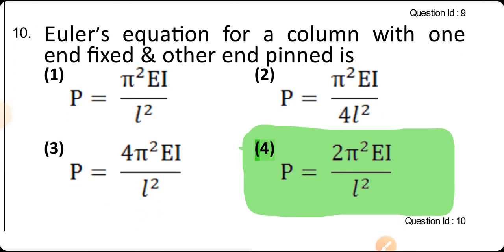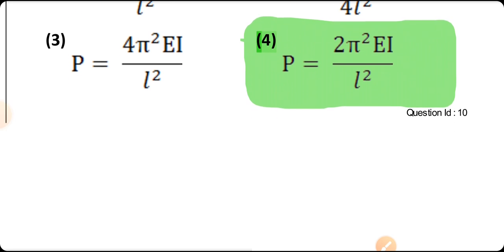Euler's equation for a column with one end fixed and another end pinned: P equals 2π²EI divided by L².